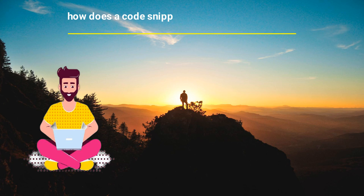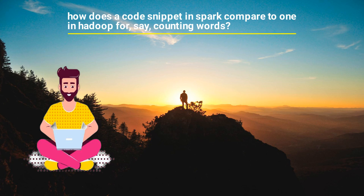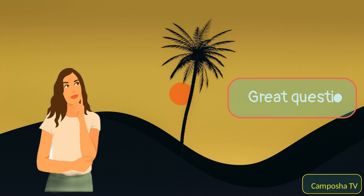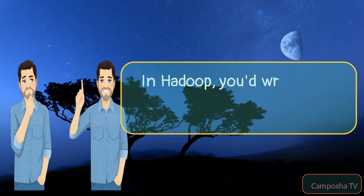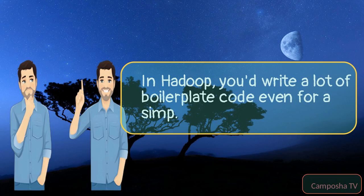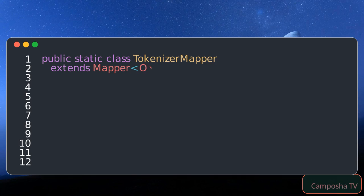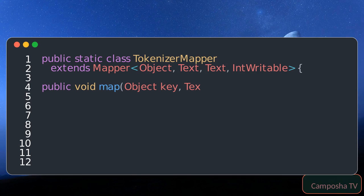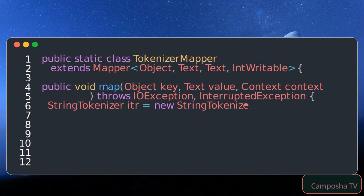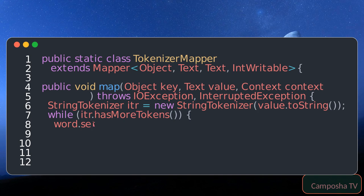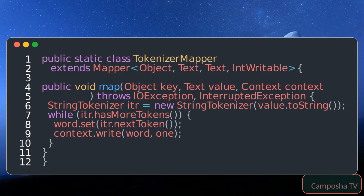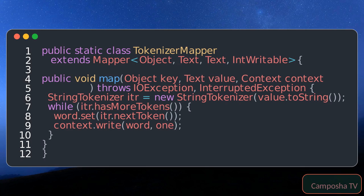How does a code snippet in Spark compare to one in Hadoop for counting words? In Hadoop, you'd write a lot of boilerplate code even for a simple word count. And that's just the mapper part, not counting the reducer and job configuration code.